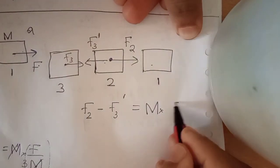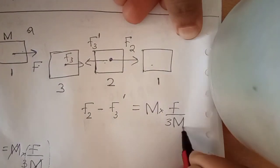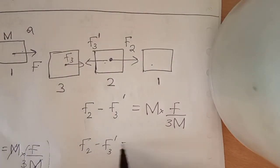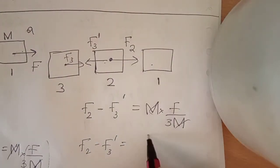The second compartment acceleration gives us F3 as the total net force contribution, expressed as mass times acceleration for that compartment.